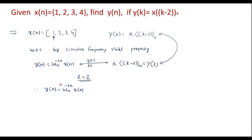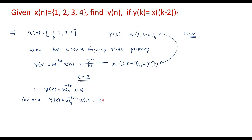Now we will find y(n) for different values of n. For n=0, y(0) is equal to W_4^(-2×0) · x(0). Here N equals 4 since there are four samples. W_4^0 is 1, and x(0)=1, so y(0) is equal to 1.